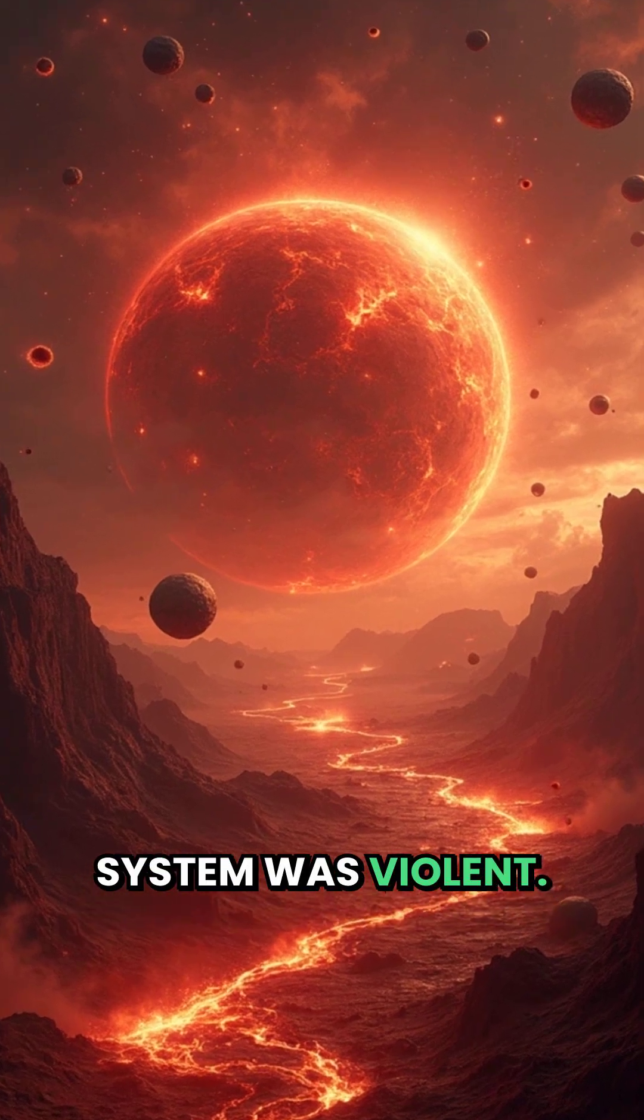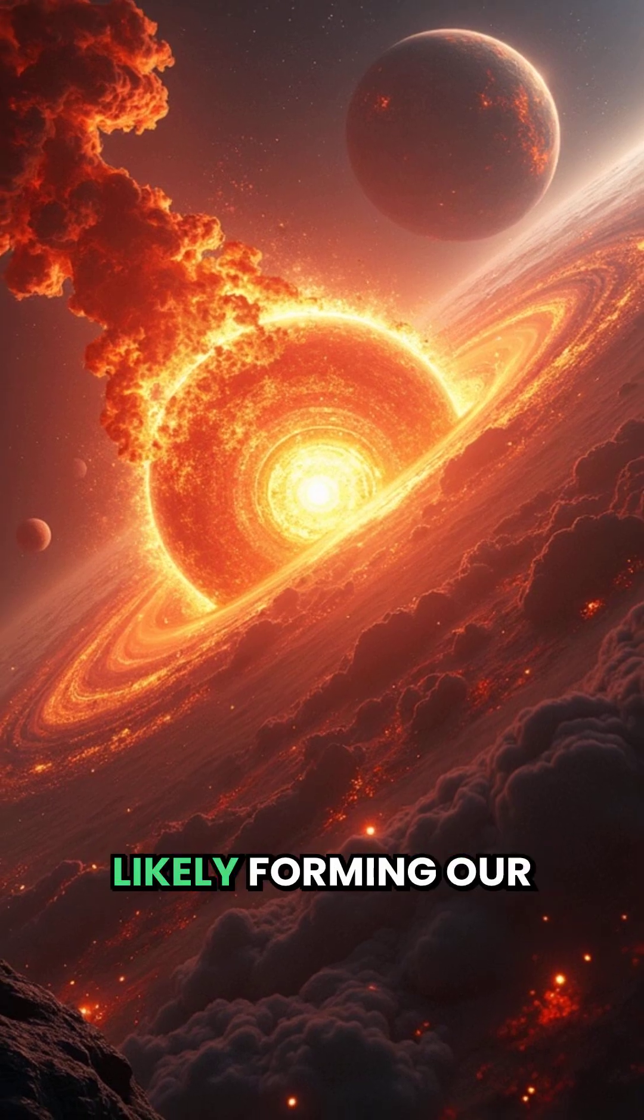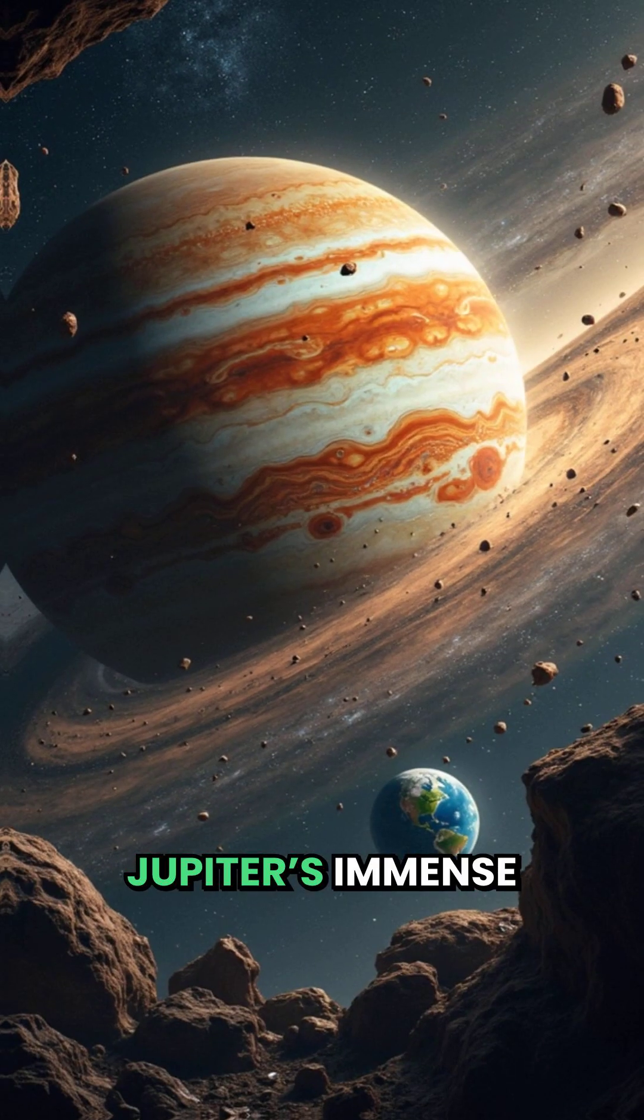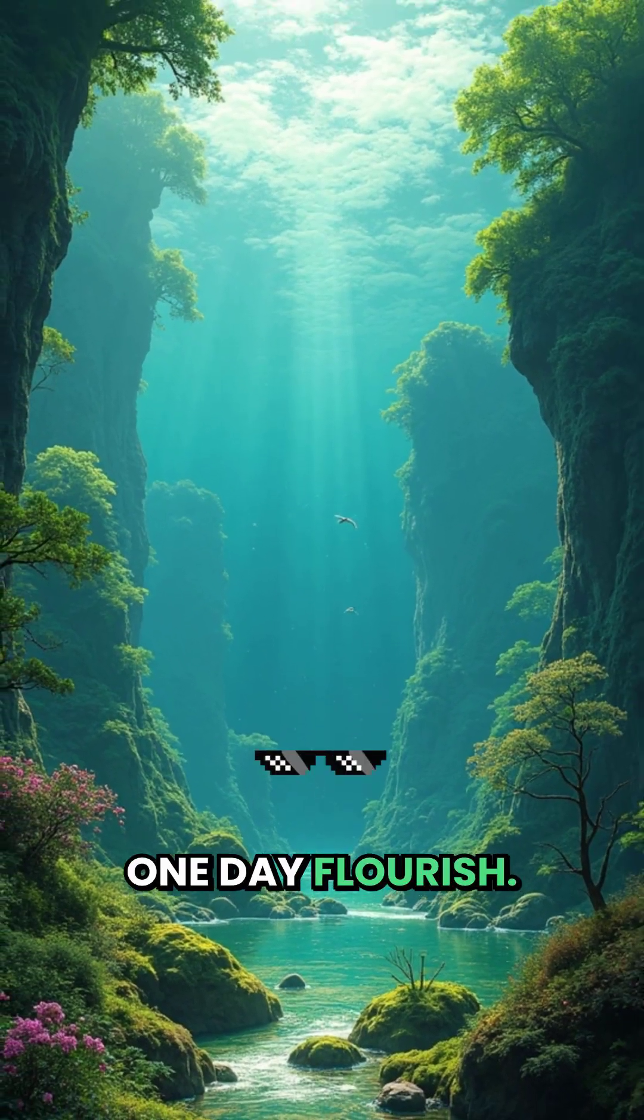The early solar system was violent. Asteroids slammed into young planets, one colossal impact likely forming our moon. Jupiter's immense gravity may have saved Earth from constant bombardment, allowing life to one day flourish.